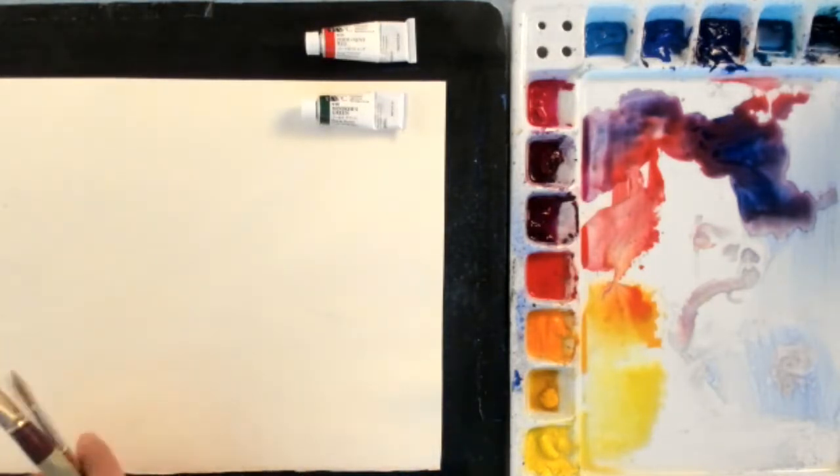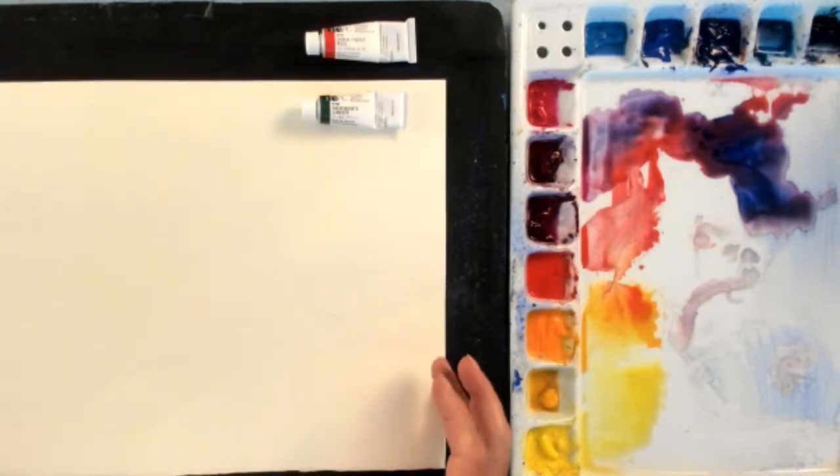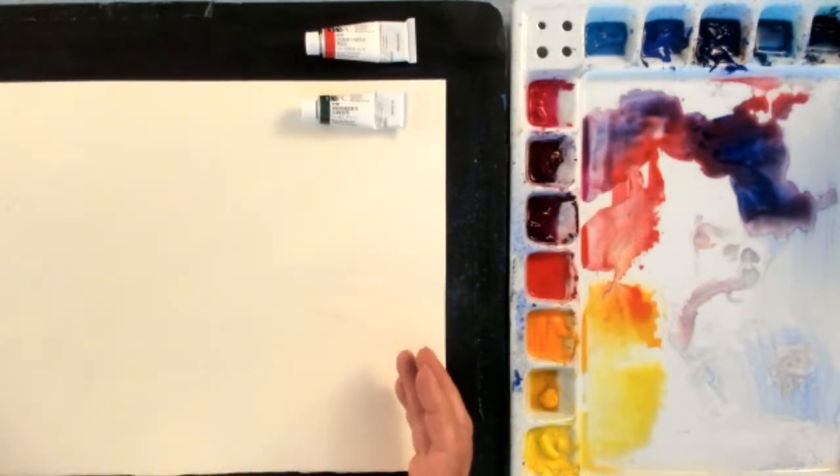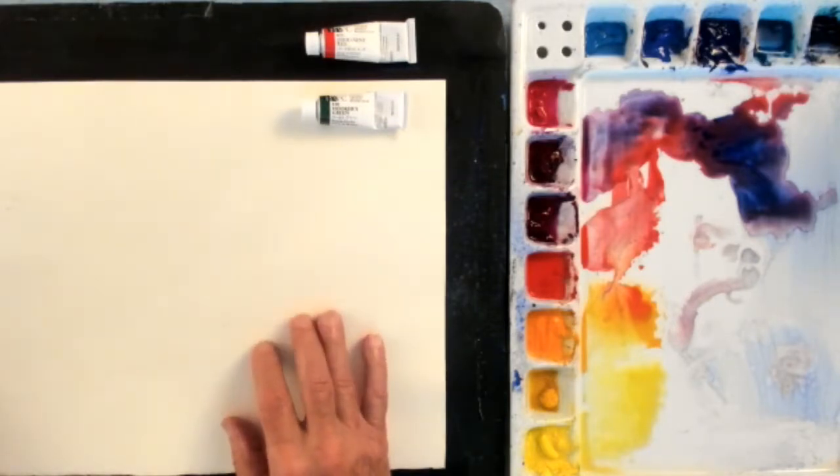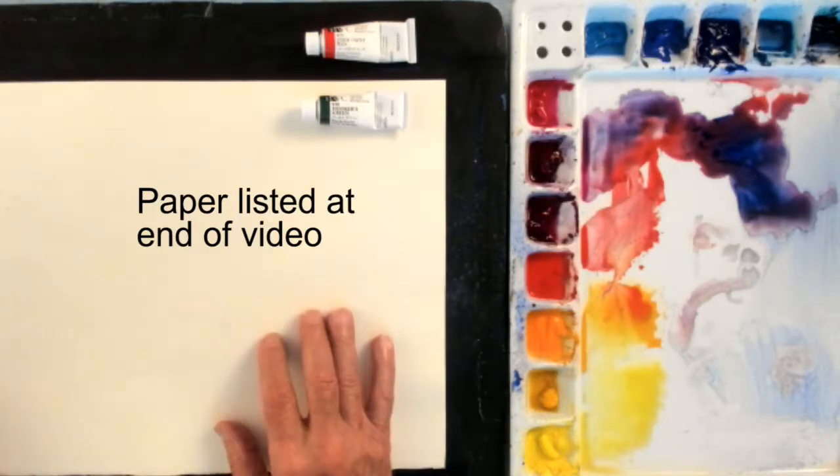The paper I use, this is 140 pounds, this is a quarter sheet here I have on the painting table. It's 140 pound Gemini made by Strathmore and I also use 300 pound.